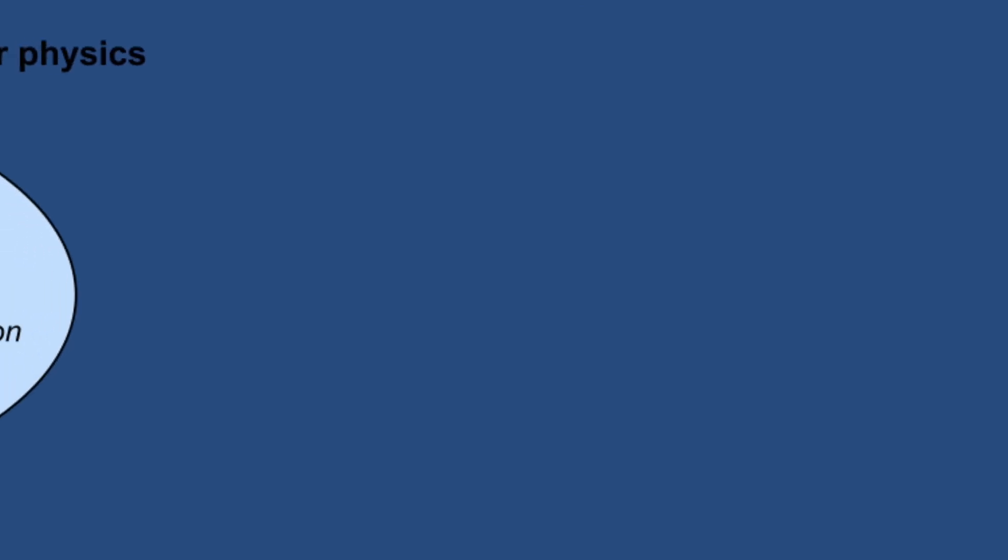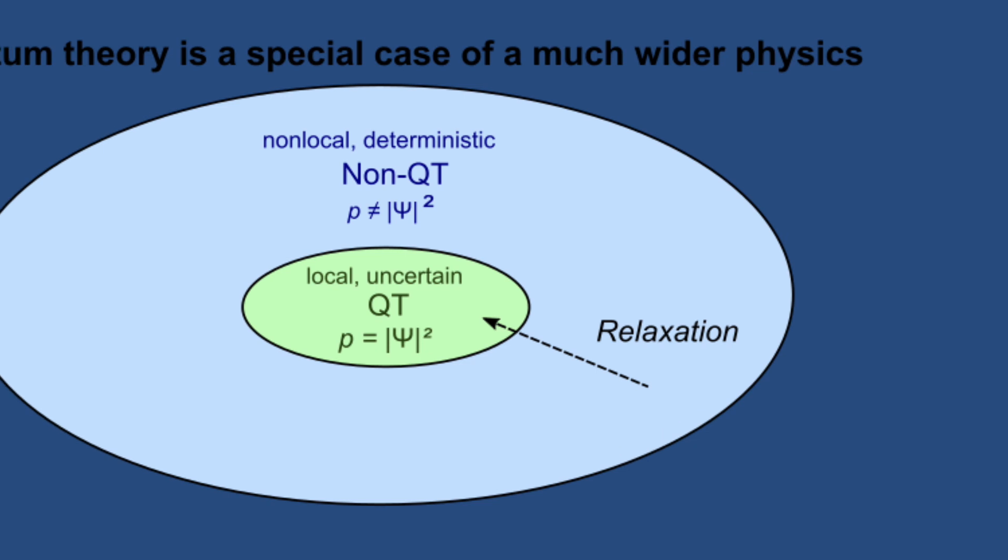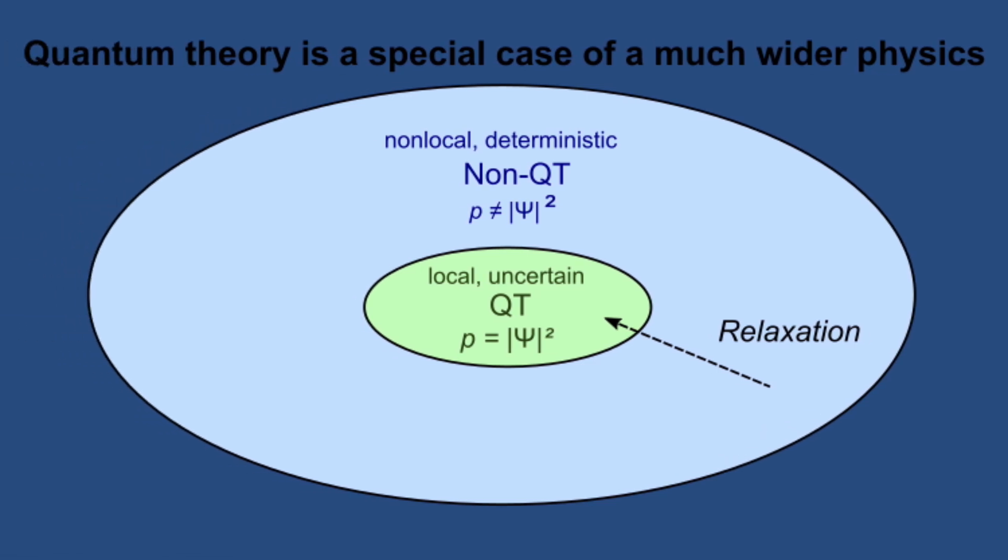So we need a non-local theory. One well-known example of such non-local theory is the de Broglie-Bohm theory. If hidden variable theories are correct, the quantum mechanics we know should be modified.